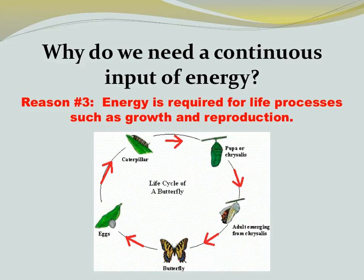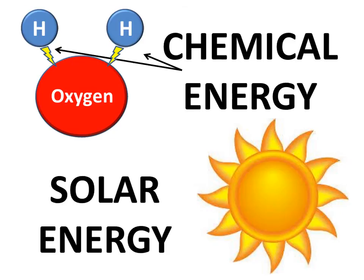The third reason we need a continuous supply of energy: energy is required for life processes such as growth and reproduction. In fact, anything that an organism does is energy dependent. The vast majority of life depend on only two types of energy: chemical energy and solar energy.